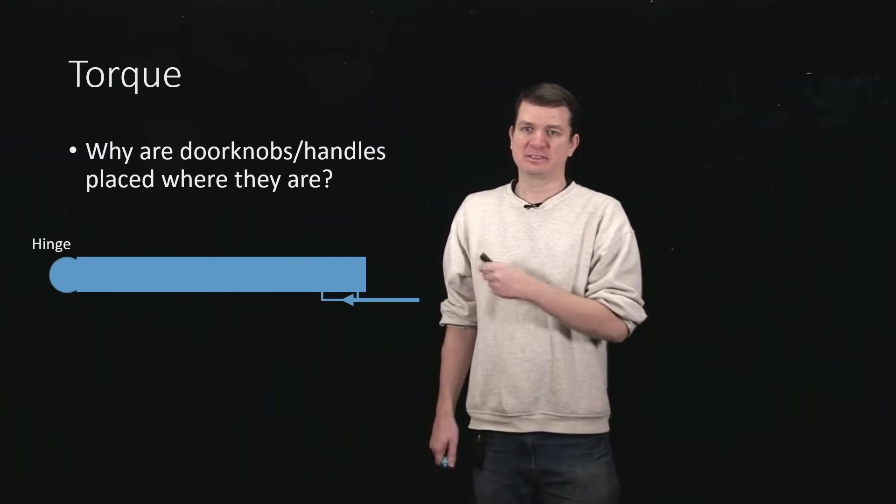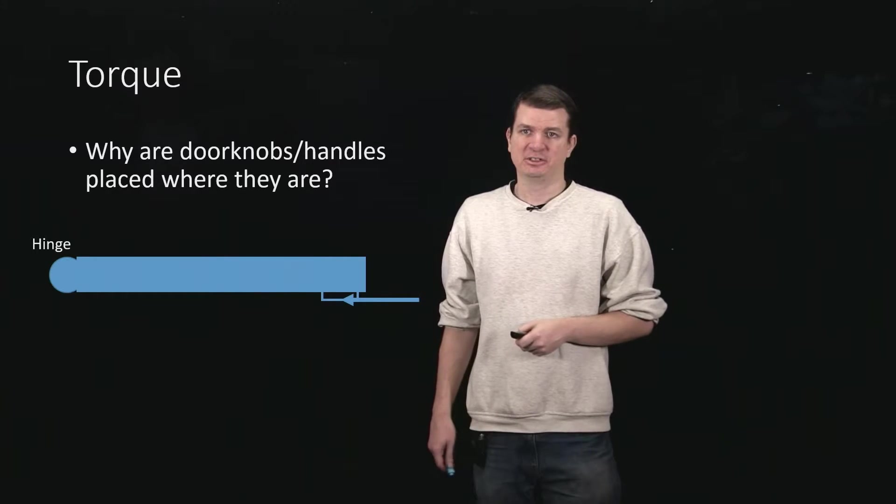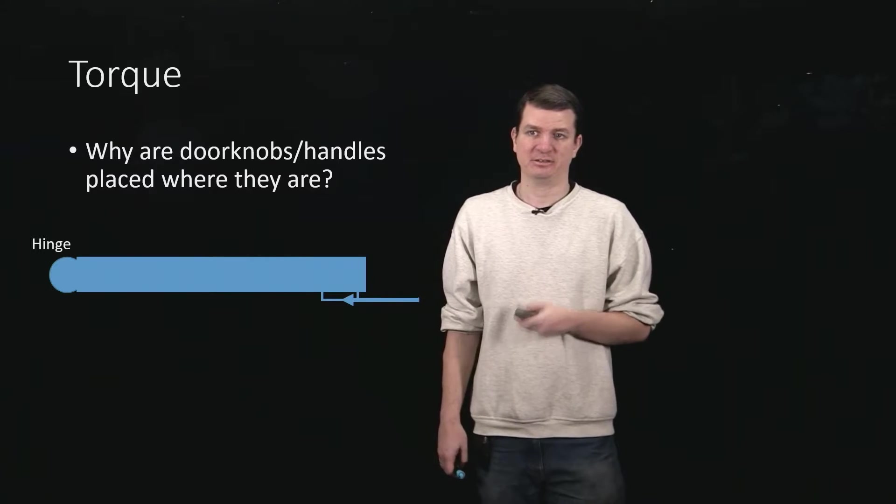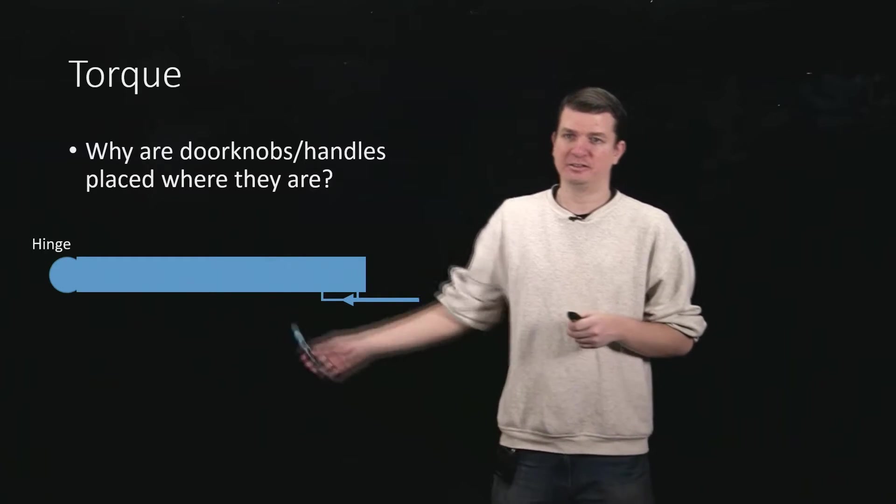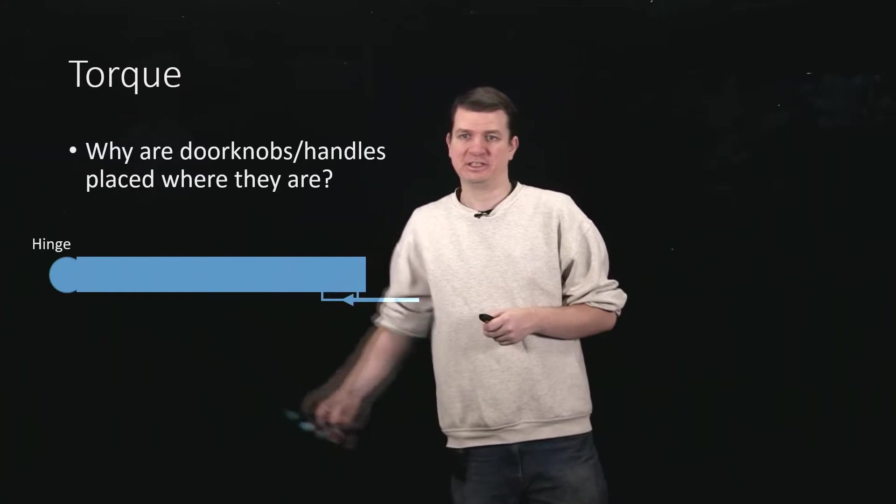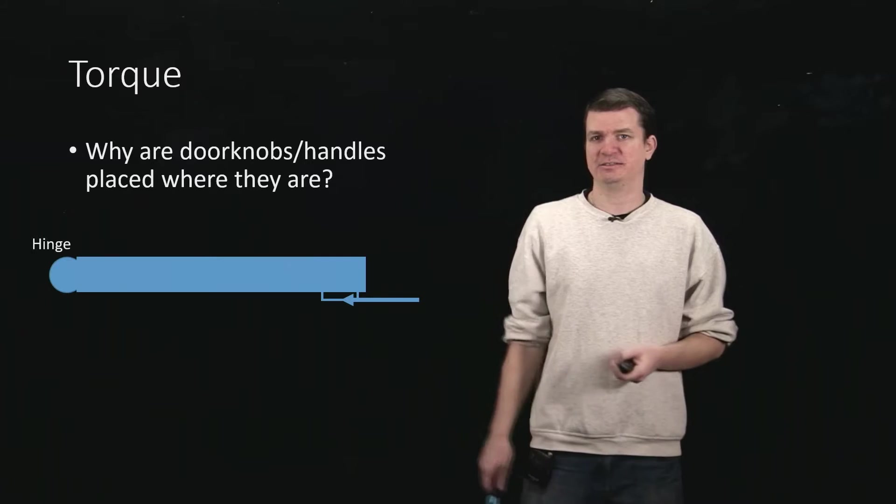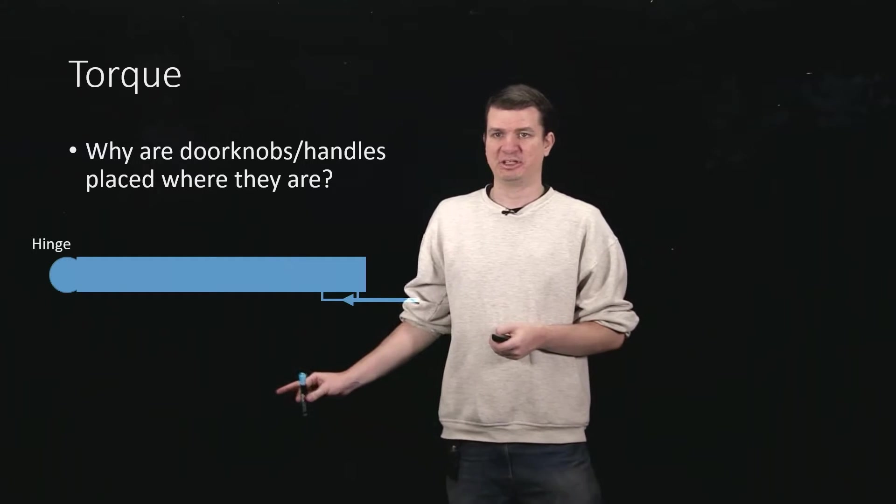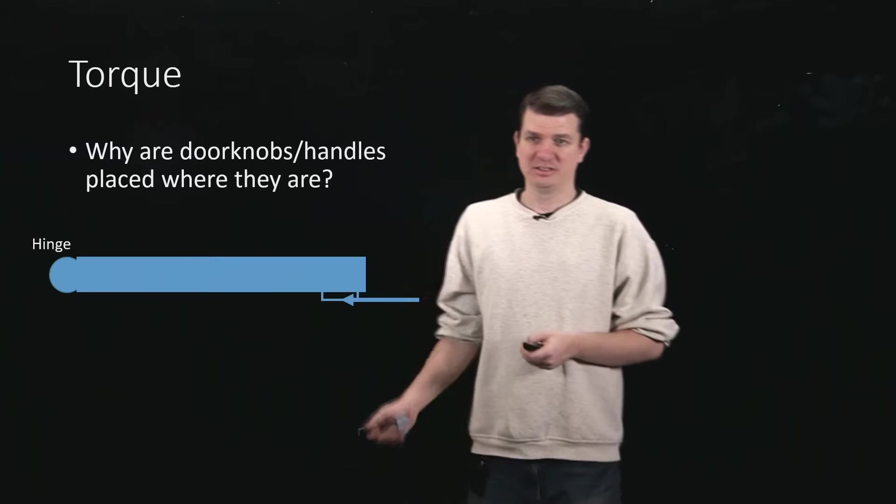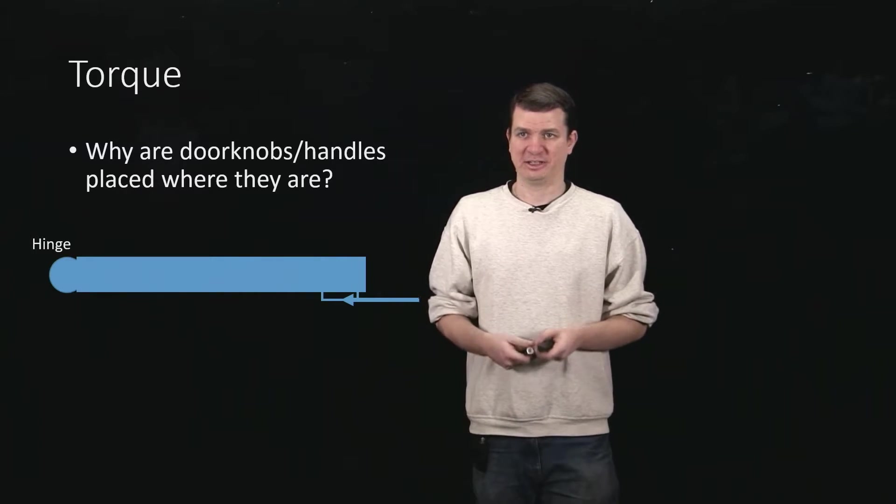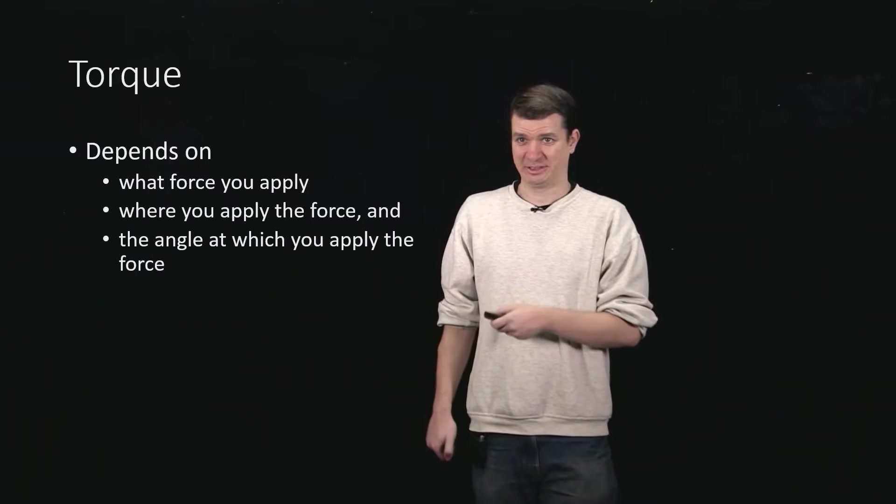So this doesn't seem to be generating torque. The one where you apply it perpendicular to the door does generate the most torque, and the other two where you apply it closer to the hinge or at some angle was generating torque but not as effectively as applying the force right at the handle perpendicular. So why is that? How can we incorporate that into our model for what torque is?